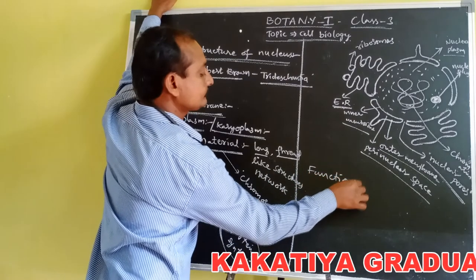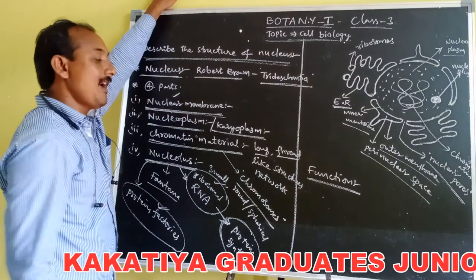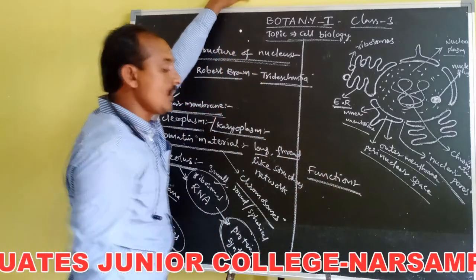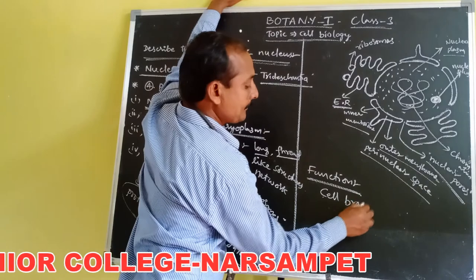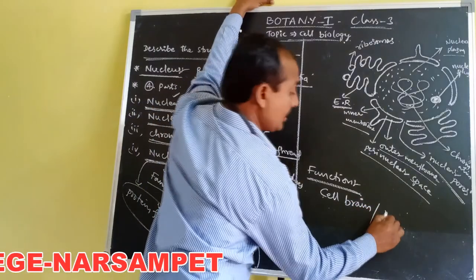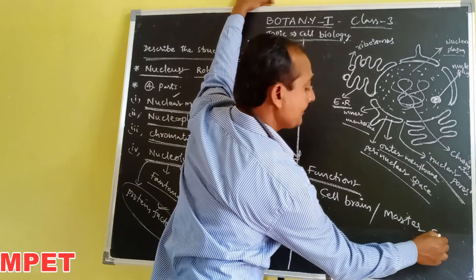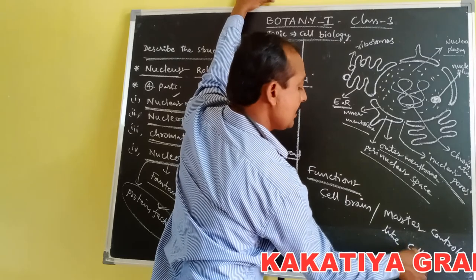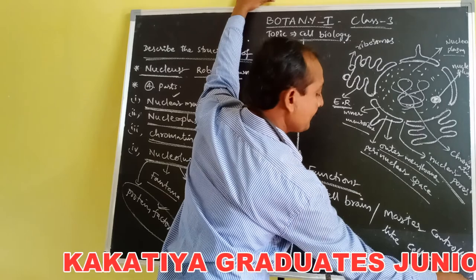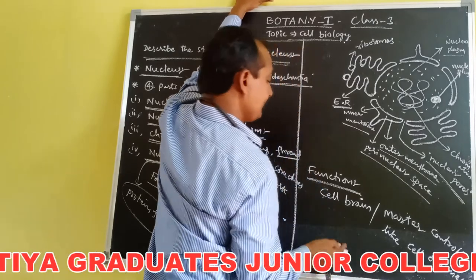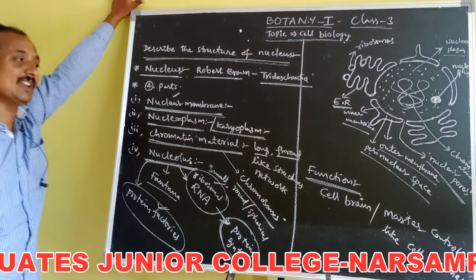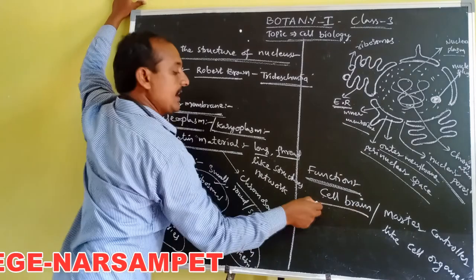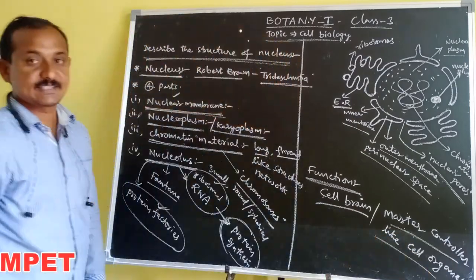The function of the nucleus: it controls all cell organelles in the cell. Hence, the nucleus is called the cell brain or master controller-like cell organelle, because the functions of all cell organelles are controlled by the nucleus.